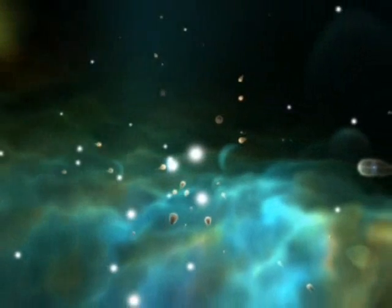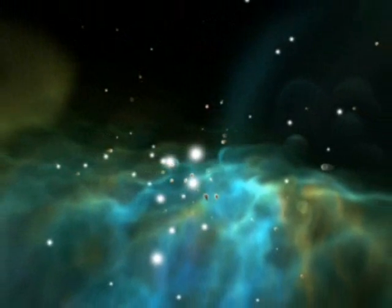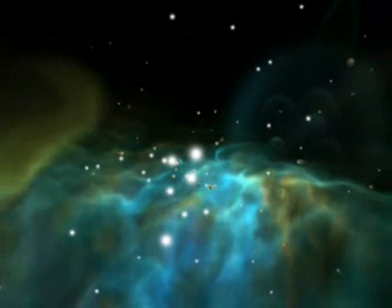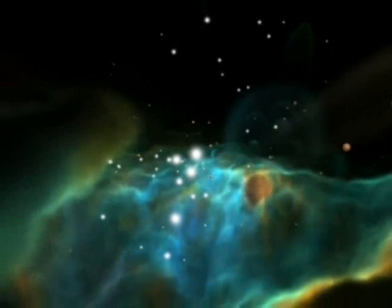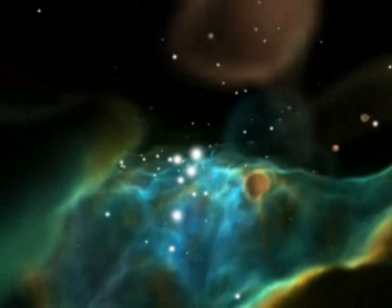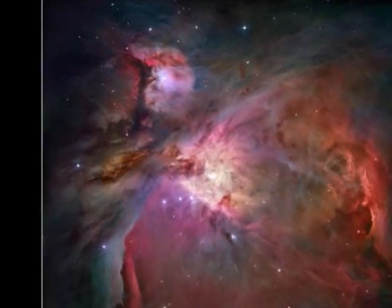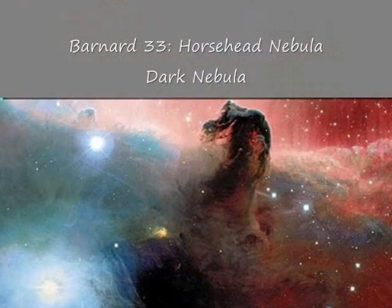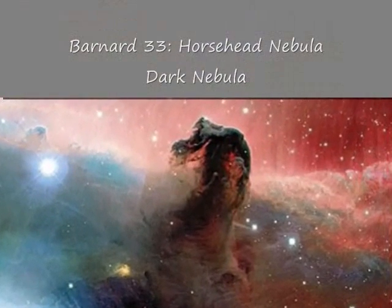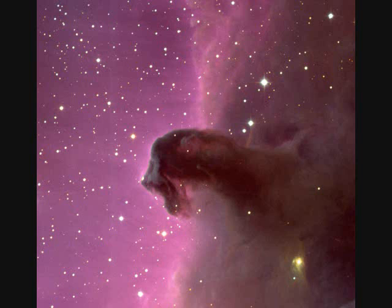A diffuse nebula also may occur near a cool star. In this case, the ultraviolet radiation from the star is too weak to enable the mass to emit light. But the dust particles scatter the starlight as a blue shade. Light scattering also causes the sky to appear blue. Such a diffuse nebula is referred to as a reflection nebula.